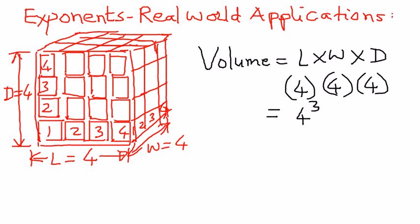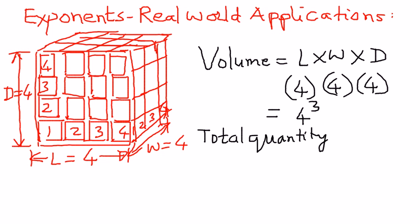Then I wanted to find out the total quantity of milk in that crate. Total quantity is equal to the volume — represented by V — times the quantity per can.